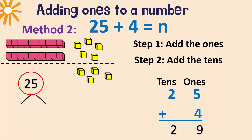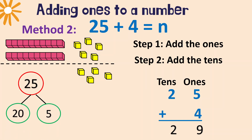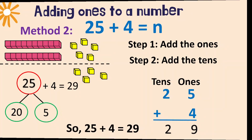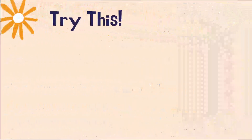We can also use the number bond. We break 25 into 20 and five — two tens and five ones — then add four. So 25 plus 4 makes 29. Let's have another example — try this with me.